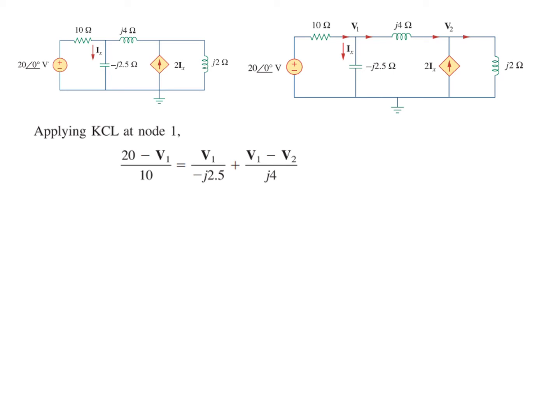Entering is (20 minus v1) divided by 10—there's no need to write angle 0. Then ix is v1 divided by minus j2.5. The third one is (v1 minus v2) divided by j4. We can simplify this by multiplying by 10. Now we need to eliminate j's from the denominator.